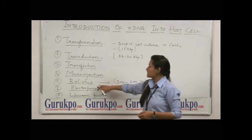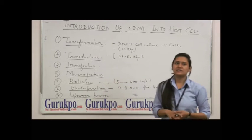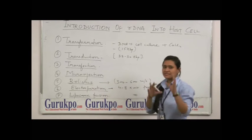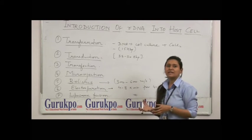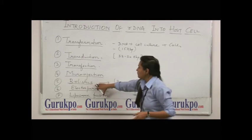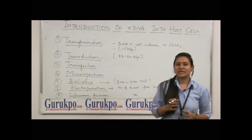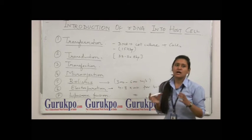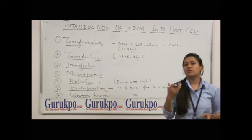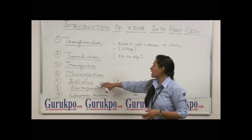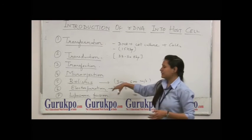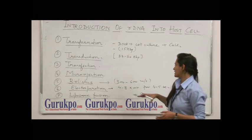Fifth is Biolistic. In biolistic, we target the cell of plant or even animal by using a microprojectile gun. In that microprojectile gun, we can use gun powder in the form of helium. It is also called microprojectile bombardment and this occurs at a speed of around 300 to 600 meters per second.